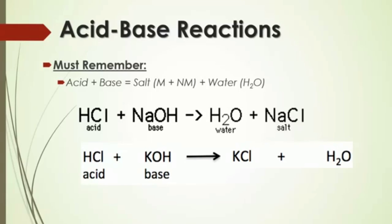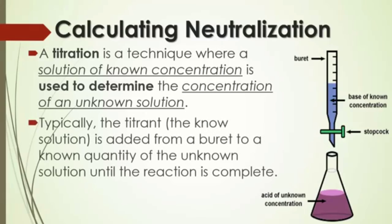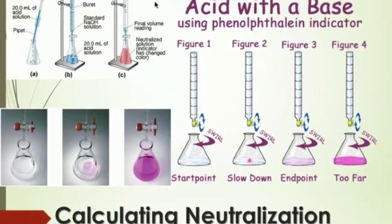Did you get potassium chloride and water? Titration is a laboratory technique where you mix a solution of known concentration or molarity with a solution of unknown concentration to determine its molarity. Typically, the solution with known concentration is put in the long skinny tube called a burette, and that is used to measure the amount needed to neutralize the solution of unknown concentration. It is important that you use an indicator so that you know when you've reached the point of neutralization — otherwise, you're simply mixing two colorless solutions and forming a new colorless solution of salt water.